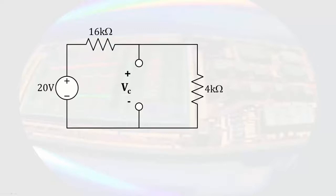If no current passes through the capacitor, the resistors form a voltage divider. The 4 kilo ohm resistor is in parallel with the capacitor, so the voltage across it is the voltage across the capacitor.